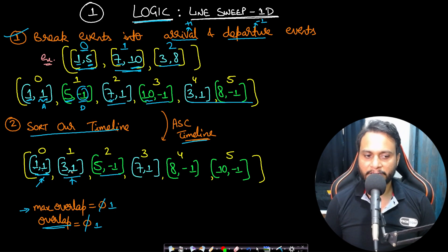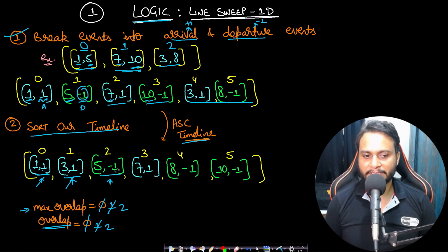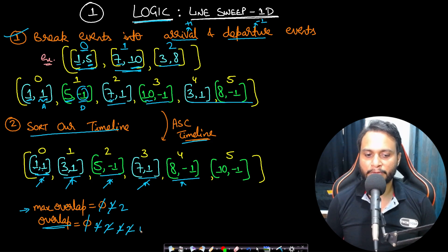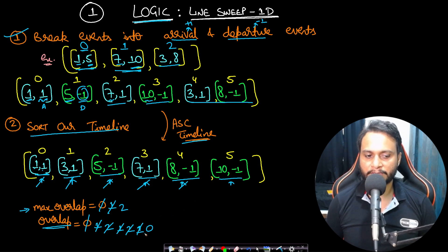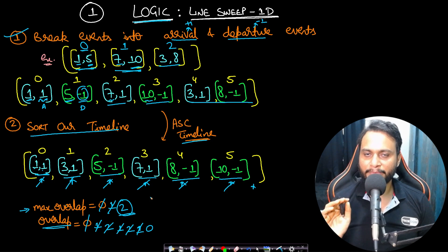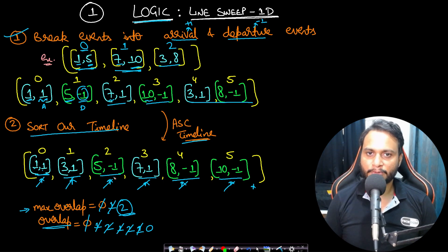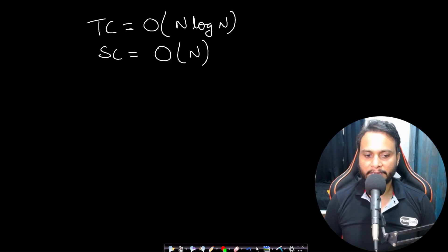Processing the sorted events: at (1,+1) overlap becomes 1, max_overlap = 1. At (3,+1) overlap becomes 2, max_overlap = 2. At (5,-1) overlap becomes 1, no update. At (7,+1) overlap becomes 2, no update. At (8,-1) overlap becomes 1, and at (10,-1) overlap becomes 0. The final max_overlap is 2, which is the answer. Time complexity is O(n log n) for sorting; parsing is linear. Space complexity is O(n).